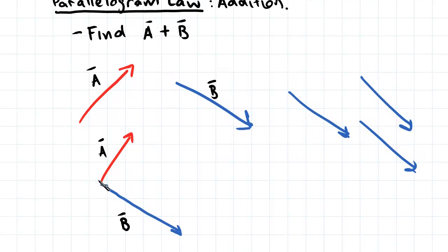So going back to the parallelogram law, we've joined these vectors at their tails, and now what we do is we form this shape into a parallelogram like this.